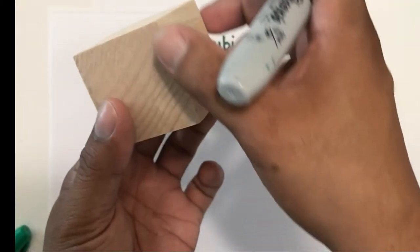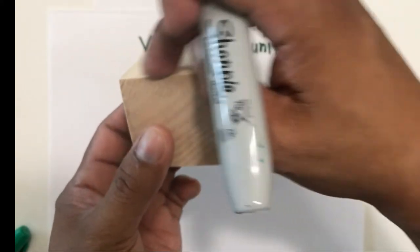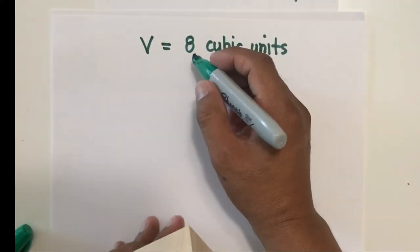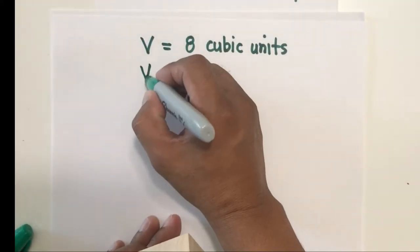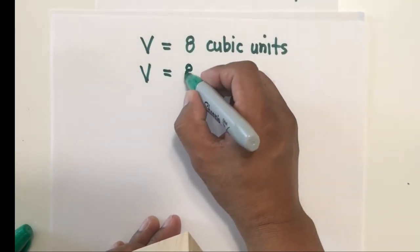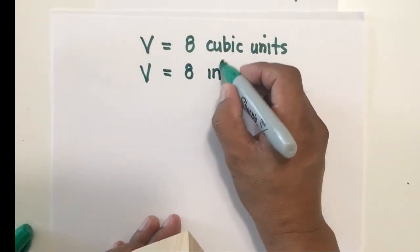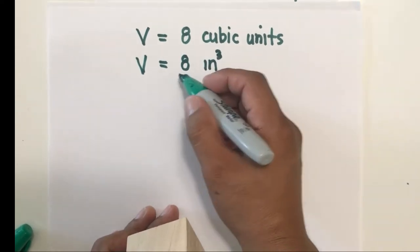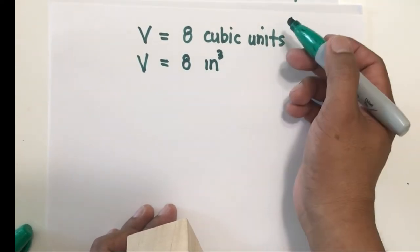Since the dimension of this cube is 1 inch by 1 inch by 1 inch, we therefore say that the volume of that particular box is 8 cubic inches or 8 inches cube.